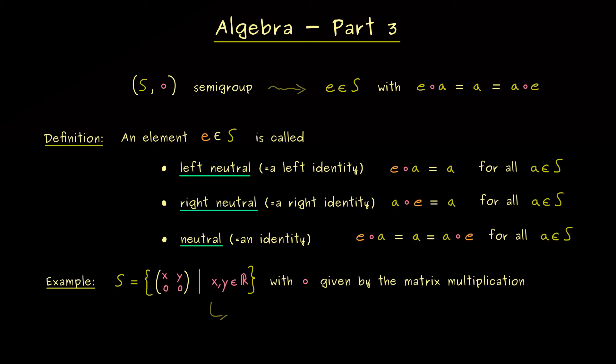And now it's not hard to show that this gives us indeed a semi-group. So for example you can already use that you know that the matrix multiplication is associative and then you just need to apply the closure law from the last video.